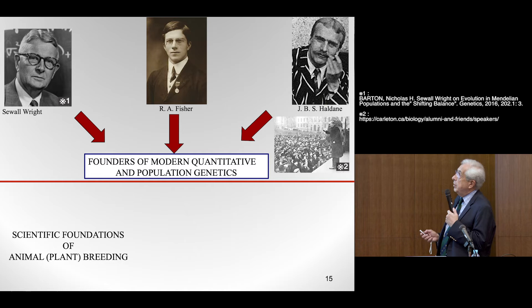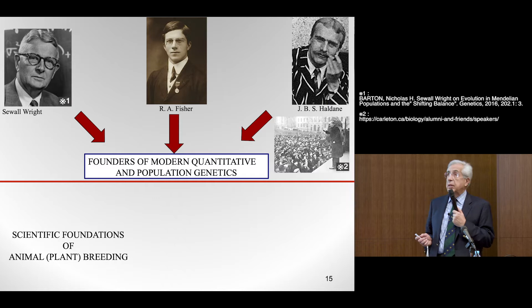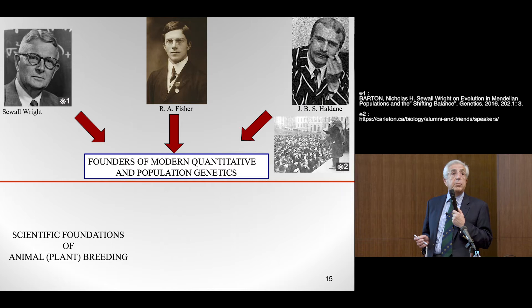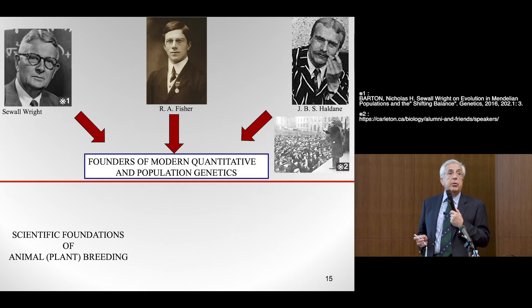Fisher was trained in mathematics at Cambridge, but was very interested in genetics. He set the statistical foundations of quantitative genetics, writing a paper in 1918 when he was 20 or 21 years old. That paper was rejected, and in it he also introduced the analysis of variance. Later on, in 1922, he wrote a paper on the theoretical foundations of statistics and introduced a method known as maximum likelihood.